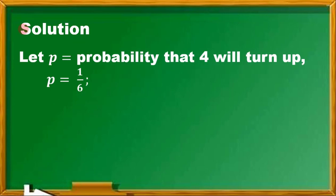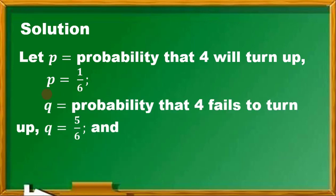Let's identify the probability of success. P is the probability that 4 will turn up. In a six-sided die, the numbers are 1, 2, 3, 4, 5, and 6—six possible outcomes. And 4 is just 1 out of 6 possible outcomes, so P equals 1/6. The probability of failure, or the probability that 4 fails to turn up, is 5 out of 6. And N equals 3 tosses.